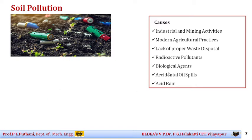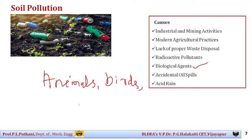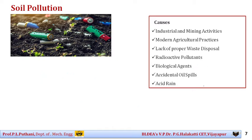Biological agents are another cause. In science, biological agents may come from animals, birds, or human beings. More amounts of excreta or fecal material on the land will poison the soil. There should be proper treatment of these biological agents so that they can be concentrated and made less toxic, reducing the chances of soil poisoning.